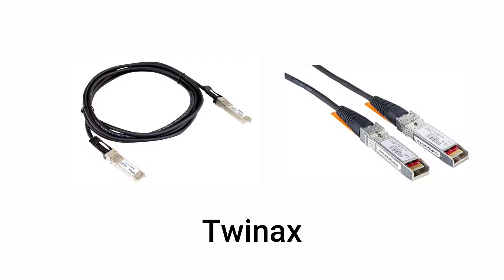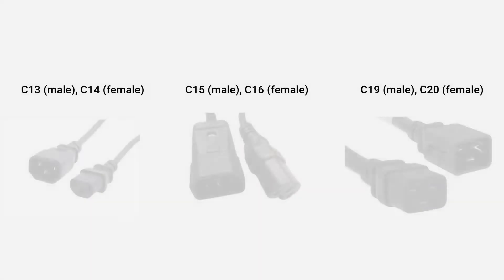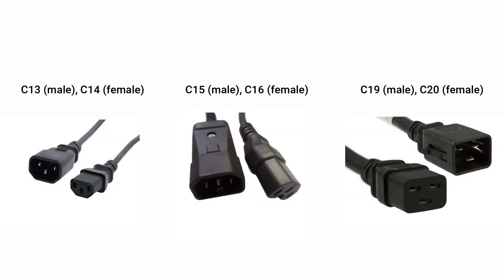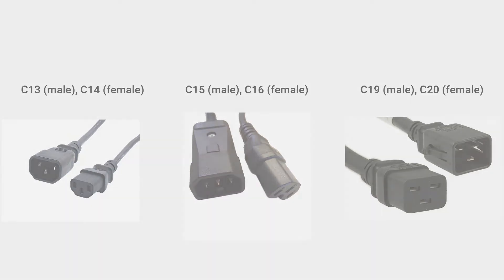Twin axe cables are much lower cost, but the negative compared to copper or fiber is that you are limited by length before data cannot be transferred properly. Power cables found on site include C13, which is the male connection, and C14, the matching socket. C15 is a similar shape to C13 with a central notch, and the C15 male plug connects to the C16 socket. C19 is also used and plugs into the C20 socket — C19 and C20 are rectangular in shape.